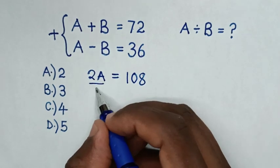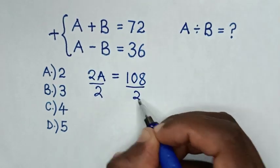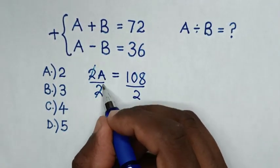Then, to find the value of A, we'll divide by 2 in both sides. So, this and this will cancel.